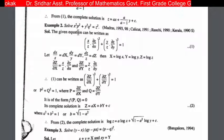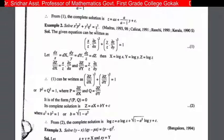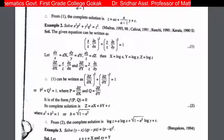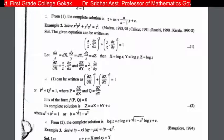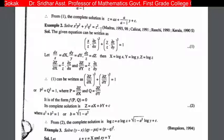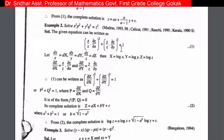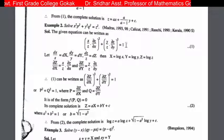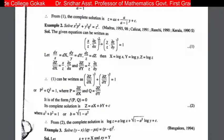Third example: Solve x square P square plus y square Q square equal to z square. This problem is not in any of the standard four forms. So we divide the whole equation by z square, giving x square by z square times dou z by dou x plus y square by z square times dou z by dou y equal to 1, which can be written as x by z times dou z by dou x whole square plus y by z times dou z by dou y whole square equal to 1.